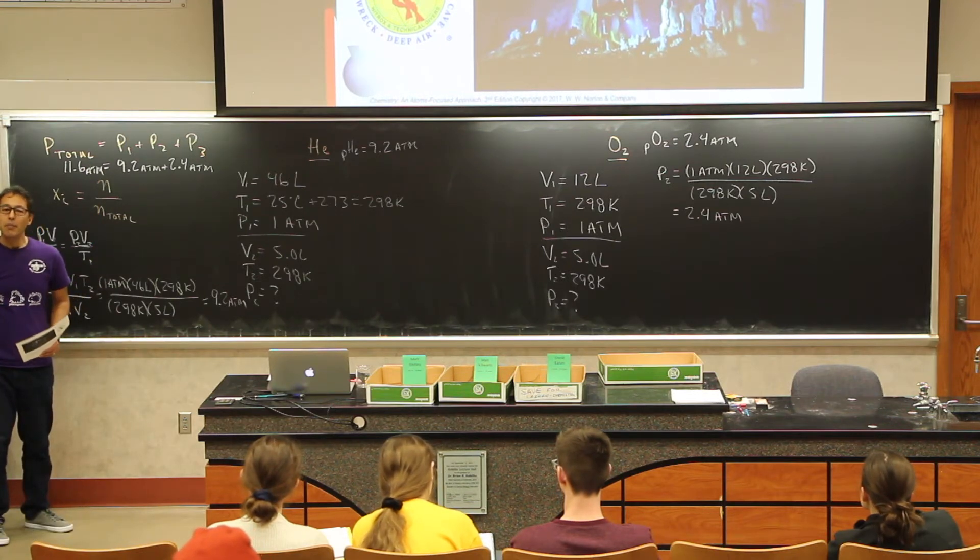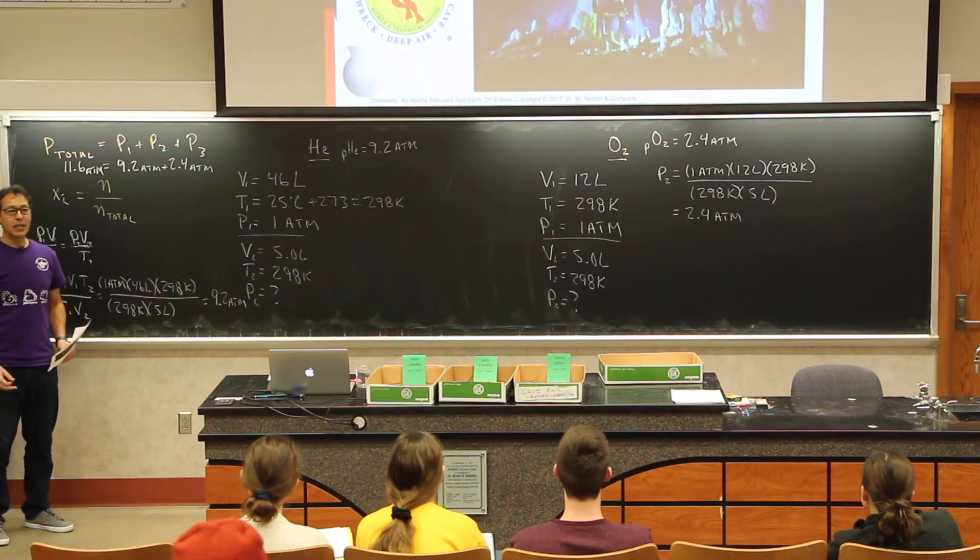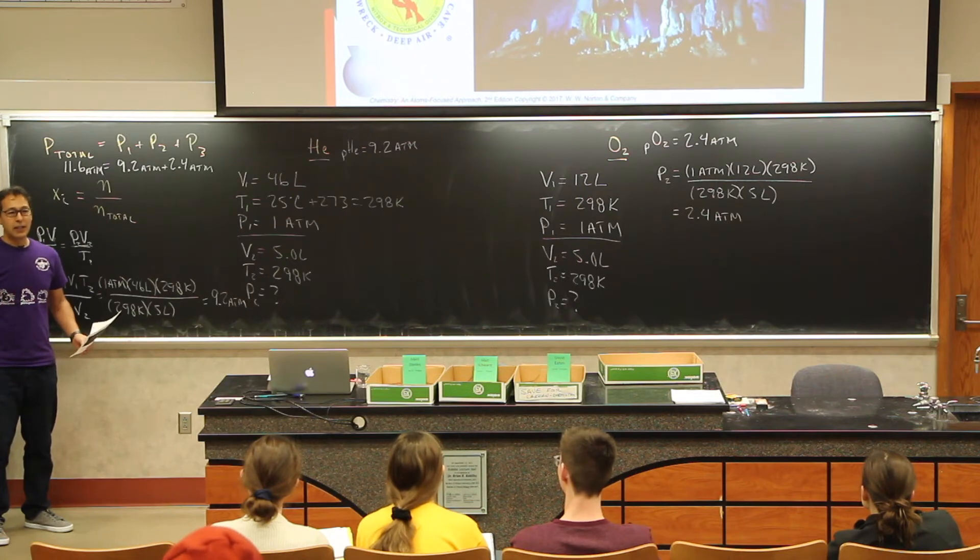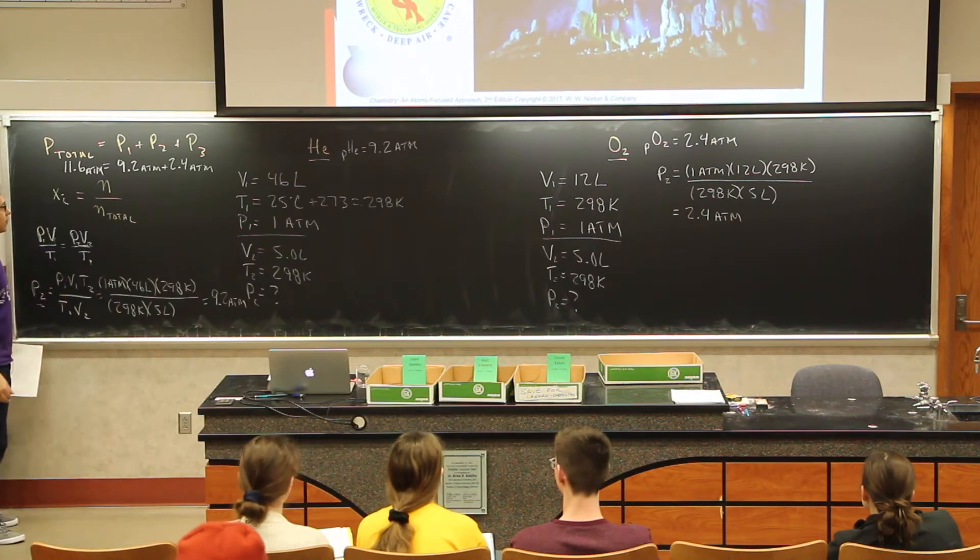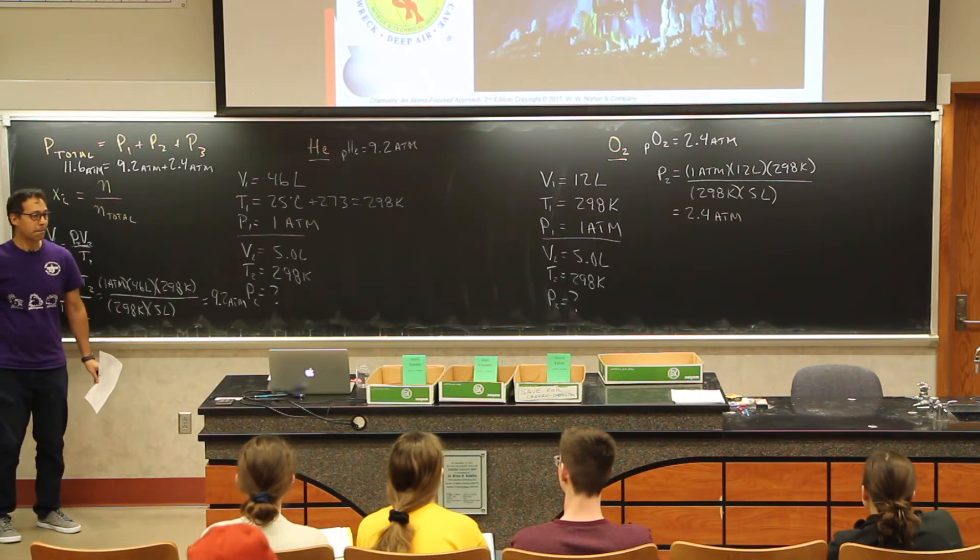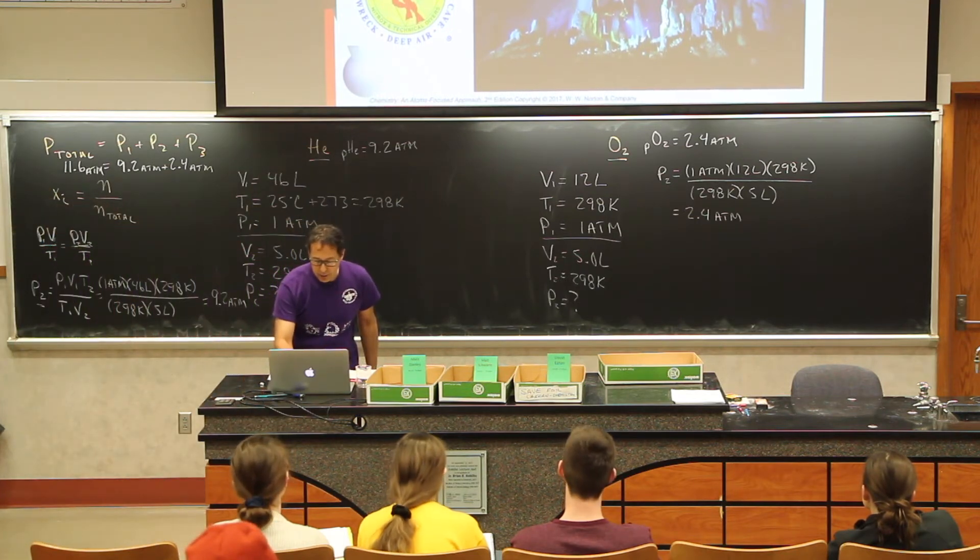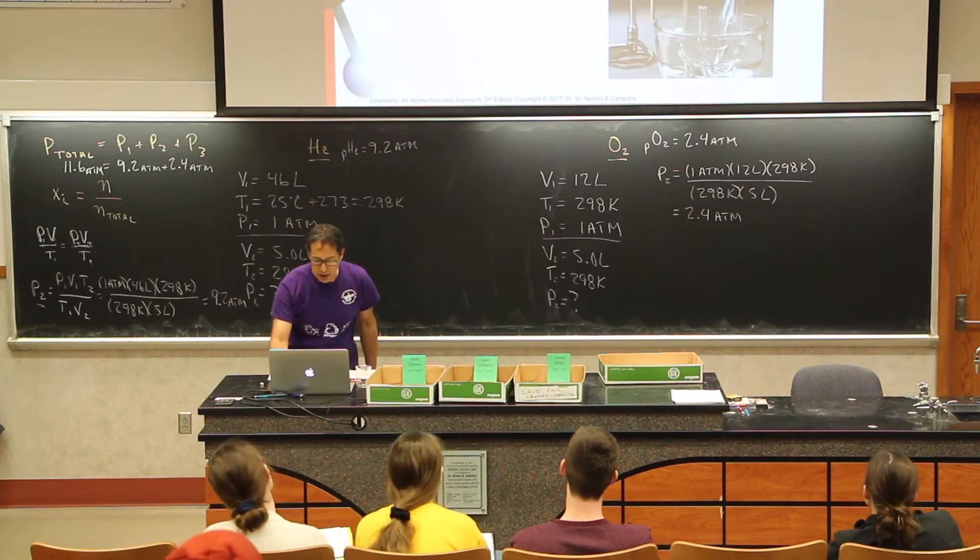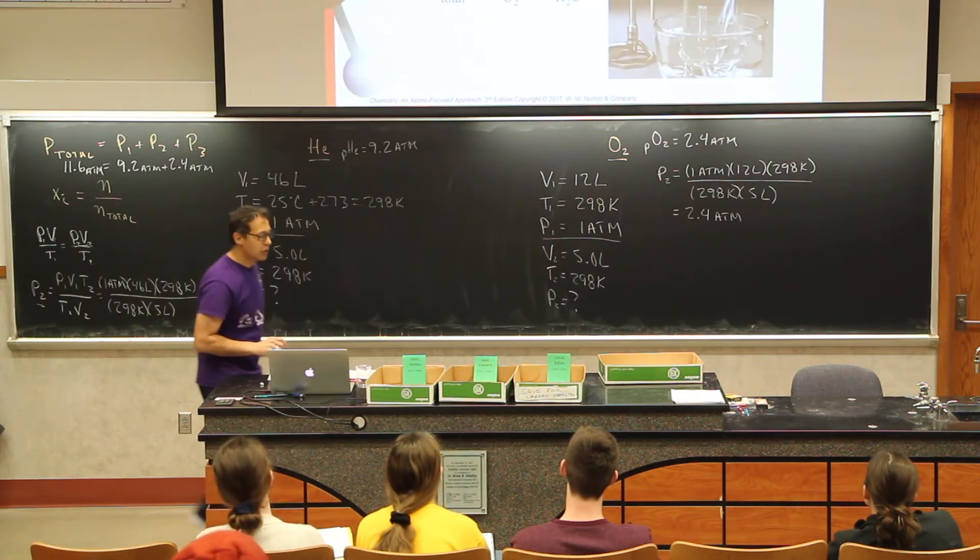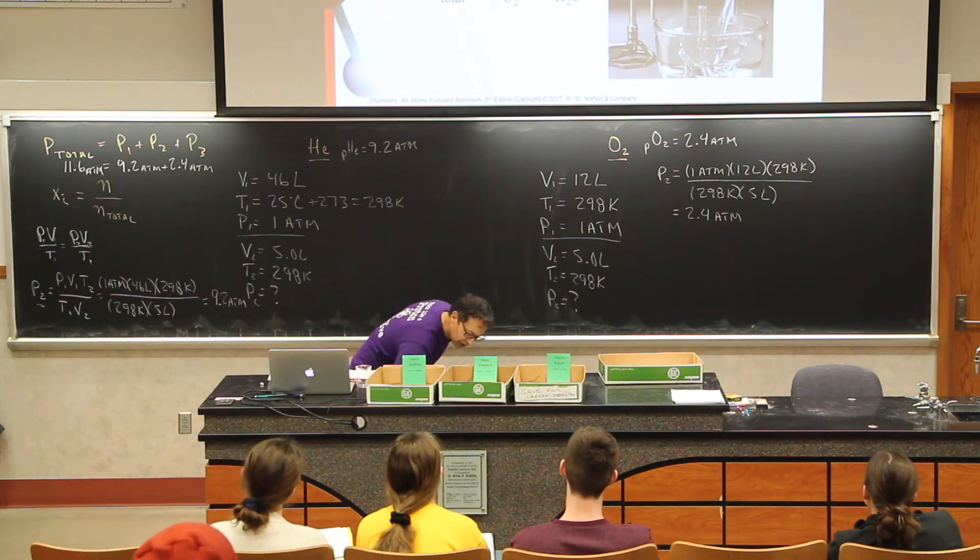Notice it didn't matter what the molar mass of these gases were. It didn't matter that one was oxygen, one was helium. It could have been carbon dioxide - that would make scuba diving really exciting. But it doesn't matter what the molar masses are. Dalton's partial pressure law. Any questions on any of that? I'm going to clean the board and show you how we use the partial pressures to calculate gases that we collect over water.